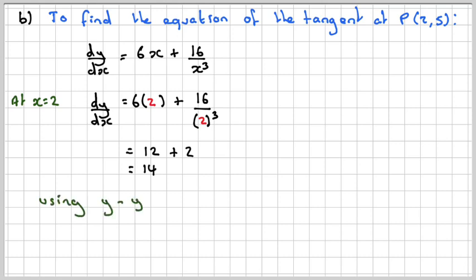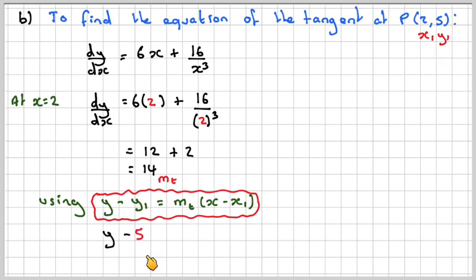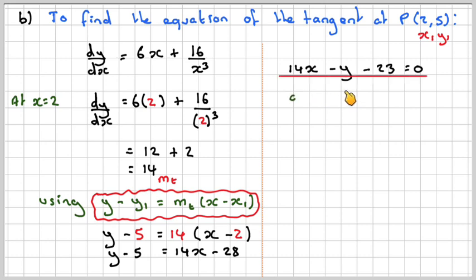Then using y - y₁ = m(x - x₁), we use the point P. So this is x₁, y₁. We're going to get y - 5 = 14(x - 2). So y - 5 = 14x - 28. Therefore we get 14x - y - 23 = 0, given in the correct format ax + by + c = 0.